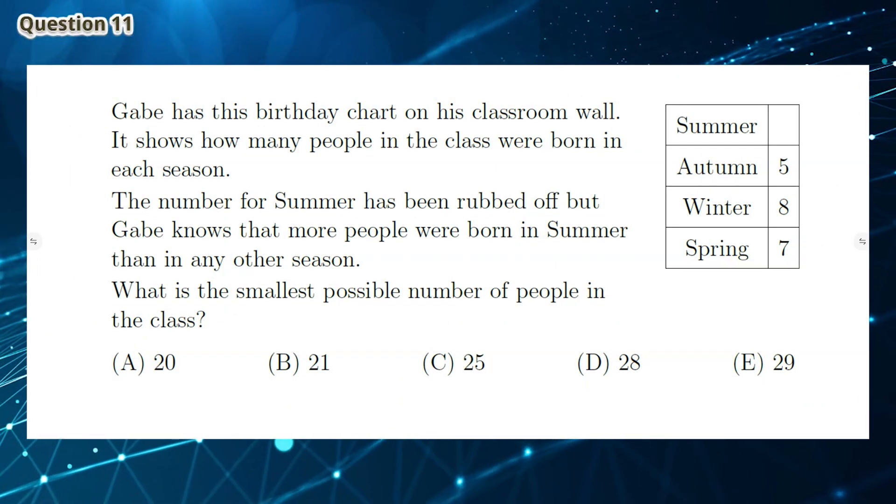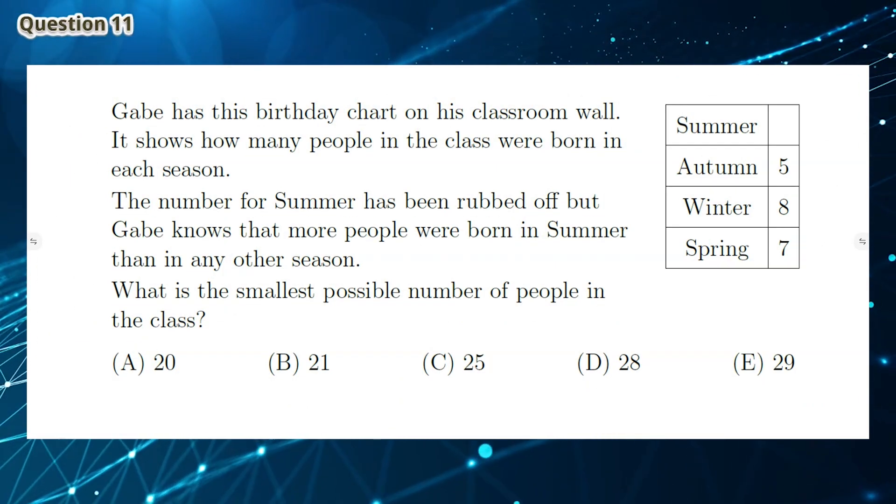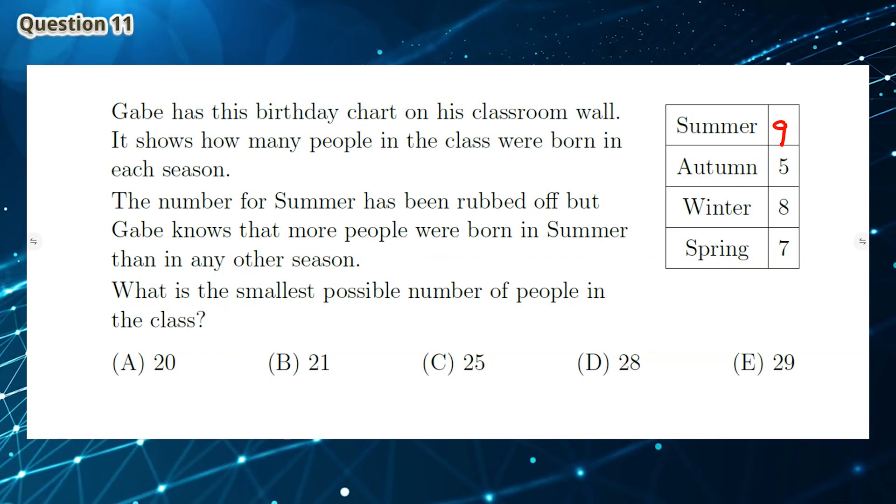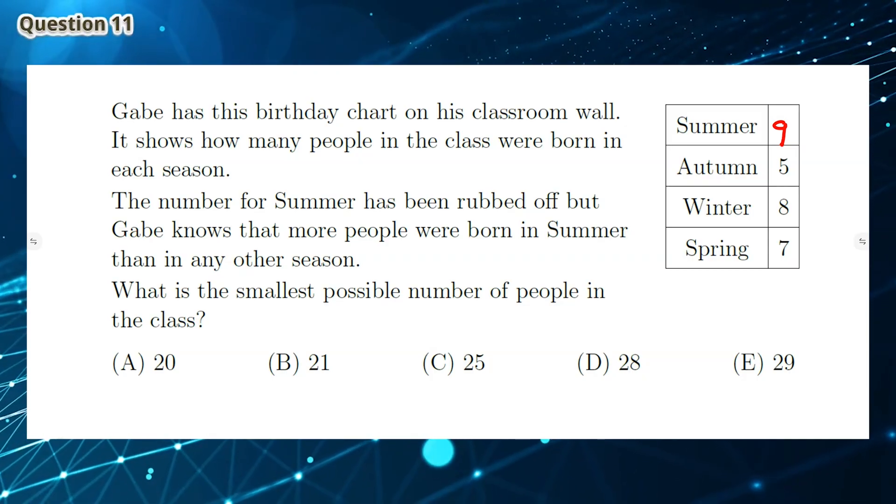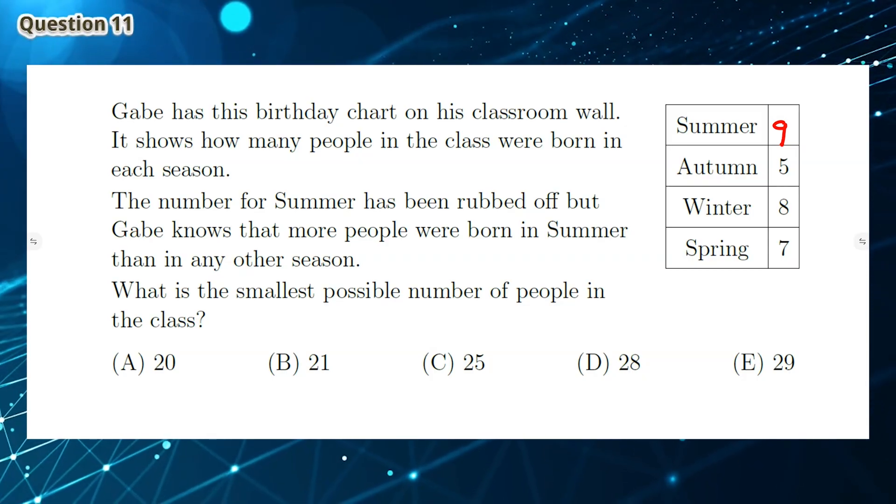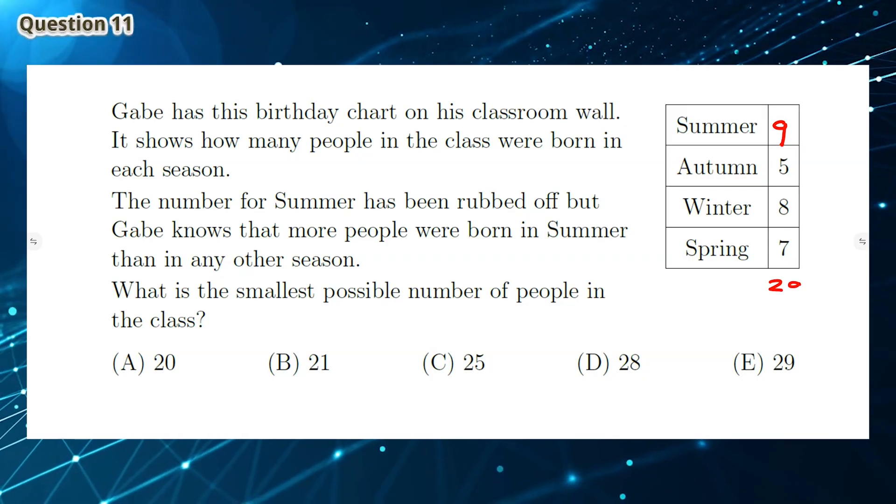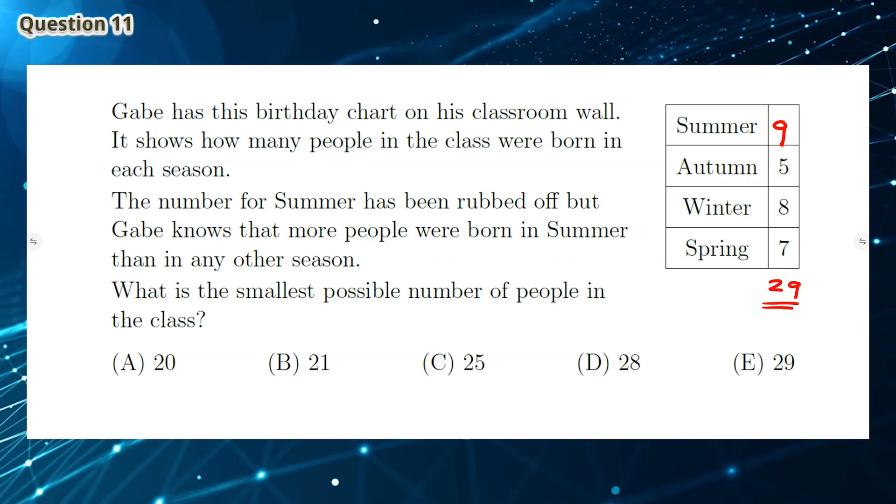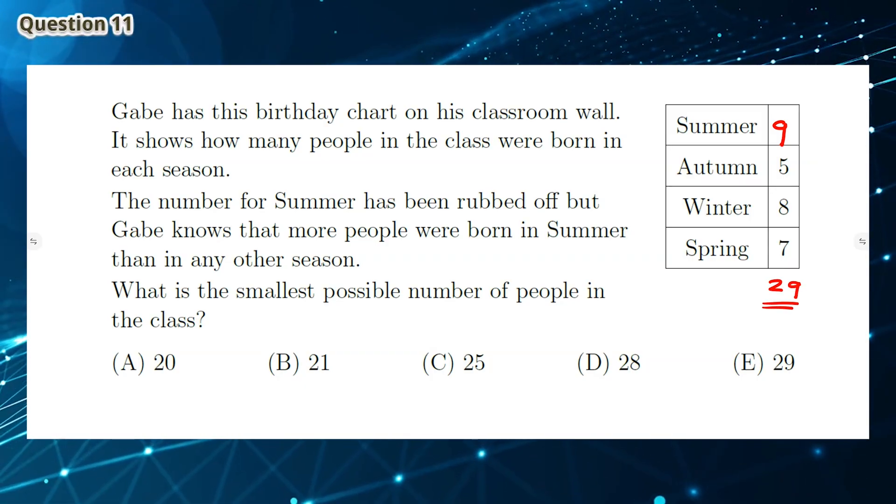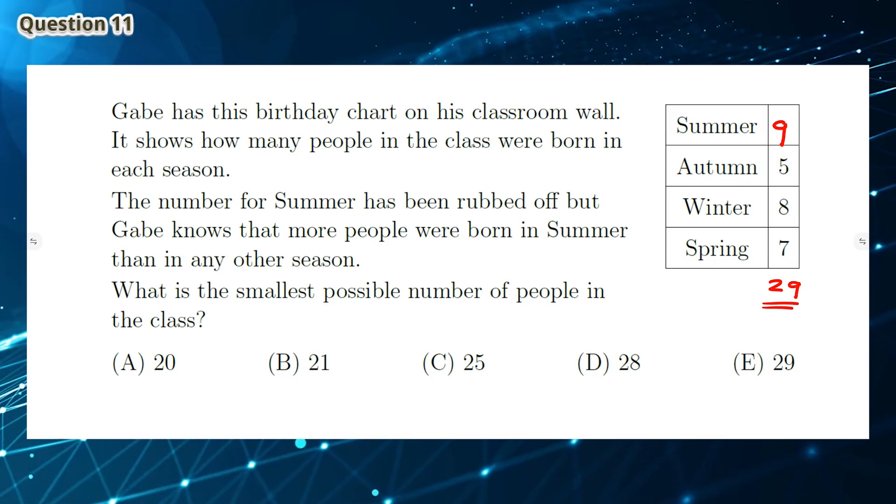Question 11: Based on the information that Gabe knows, summer has to have at least 9 people, as winter has 8 and summer has the most. So if we add all this up, we get 29. So 29 is the smallest possible number of people in this class. So the answer is E.